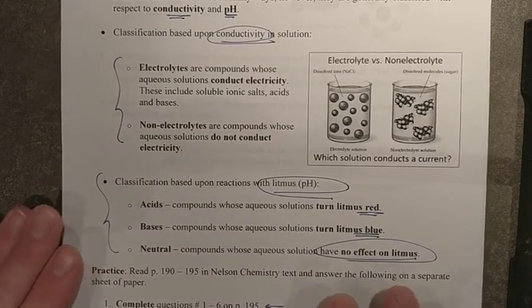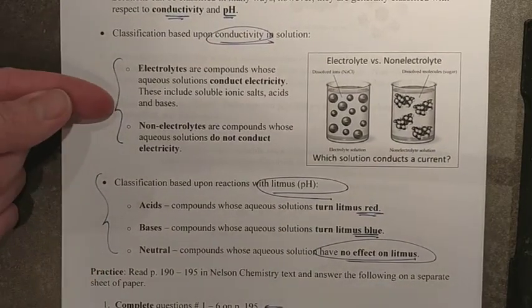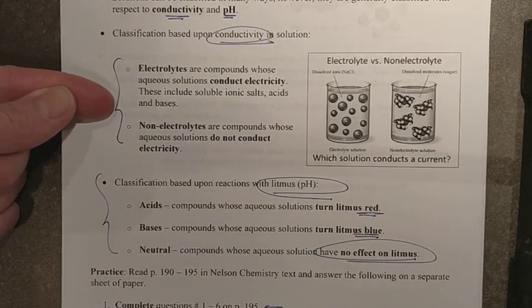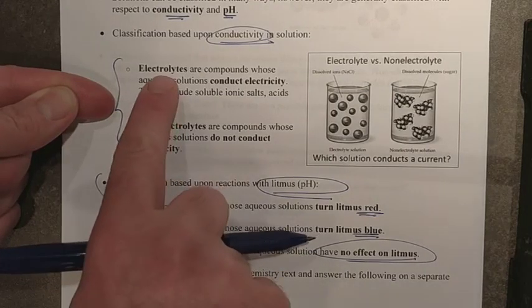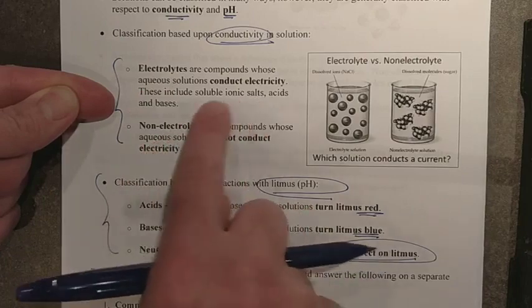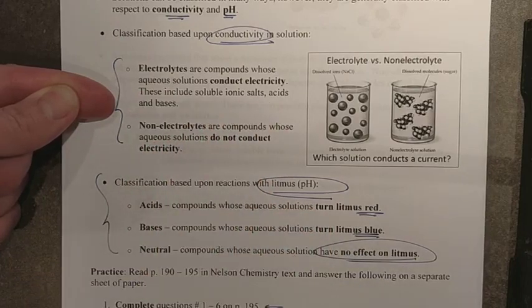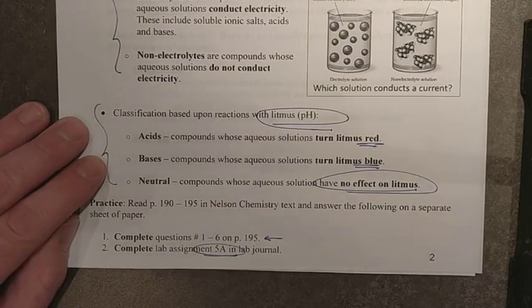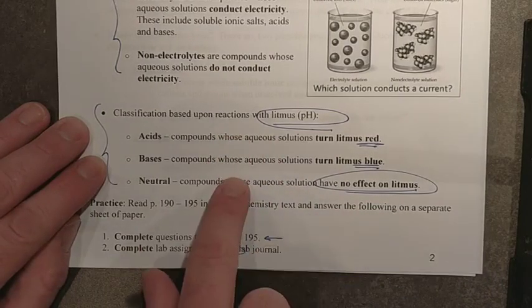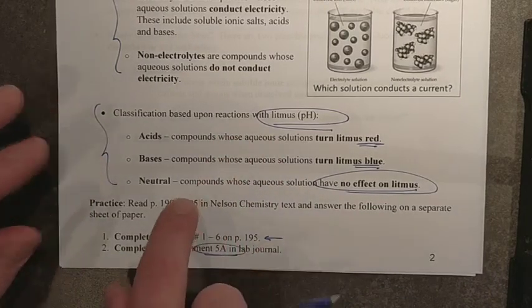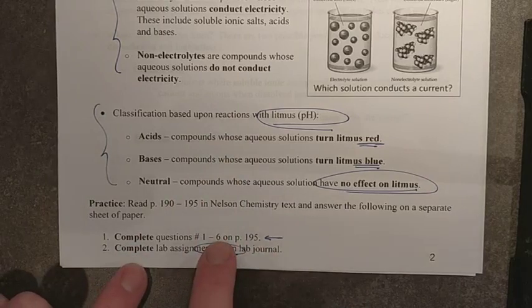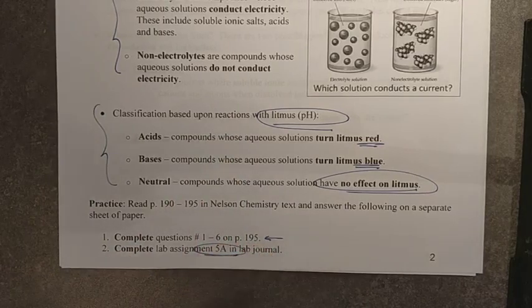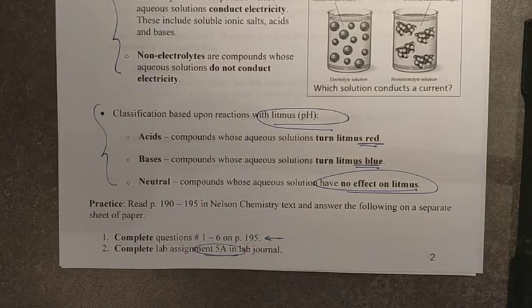Again, remember for especially lab 5a, you need to be able to differentiate between conductivity and non-conductivity. So something that is an electrolyte or not, that can help start to identify what you might have. And then of course, the other second test that must be done determines acidity, basicity, or neutrality. And so again, practice some of that in 195 and then that should help you for 5a.